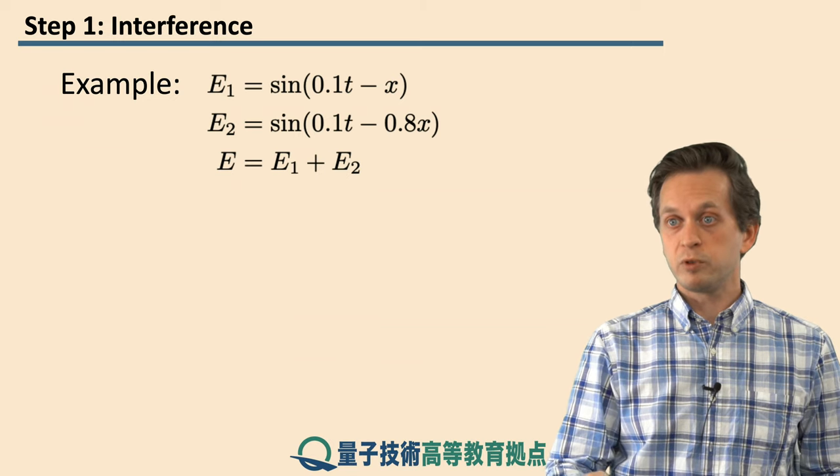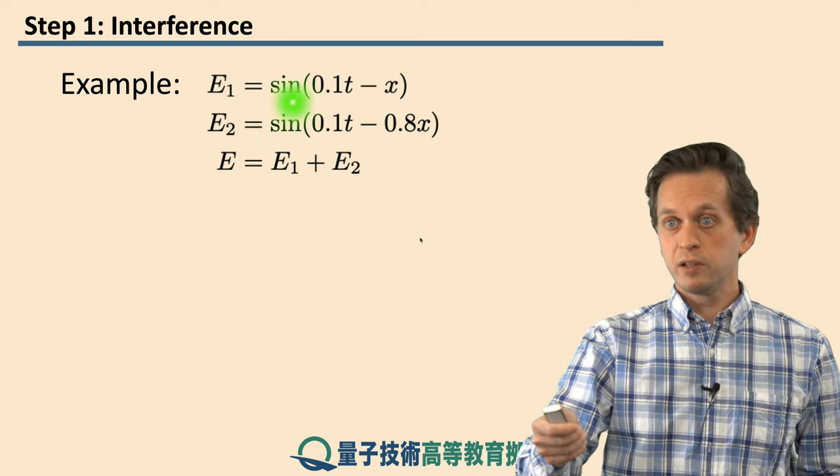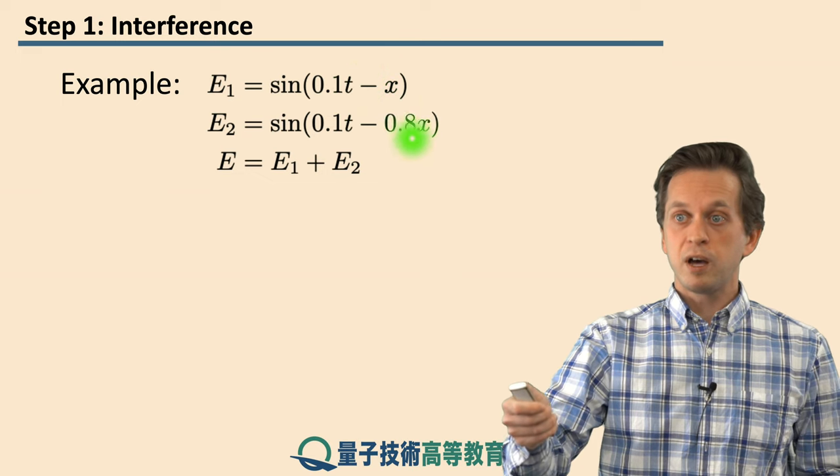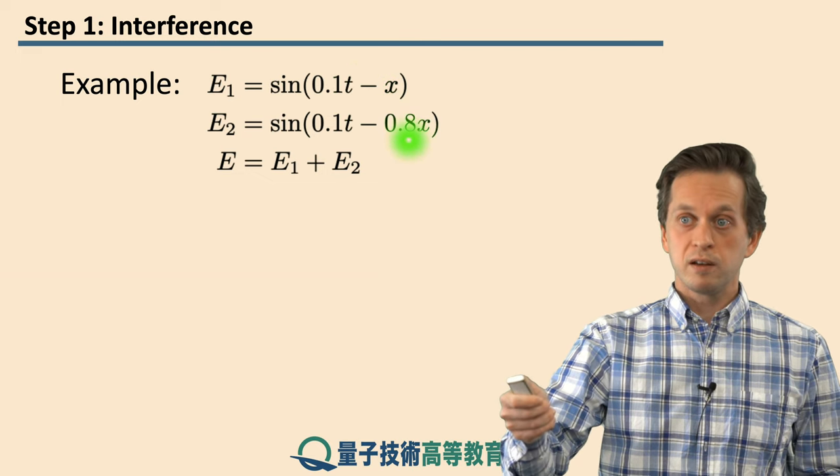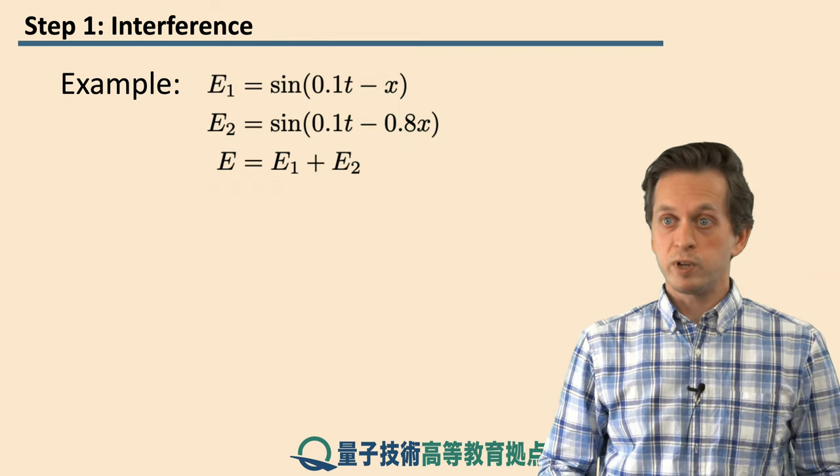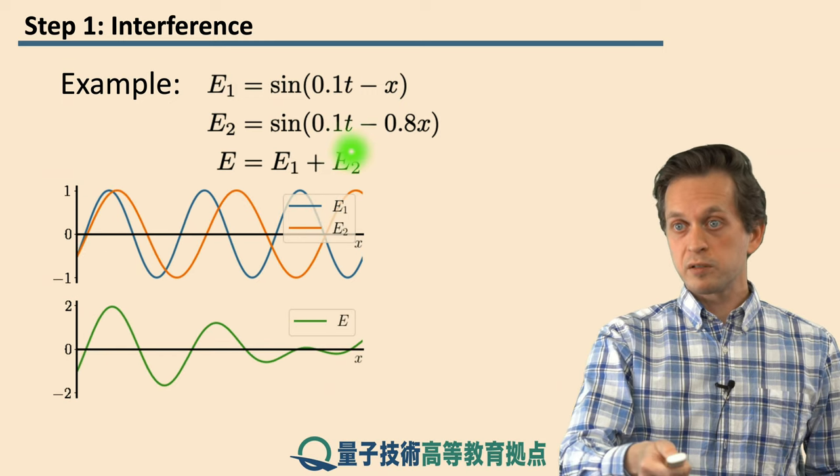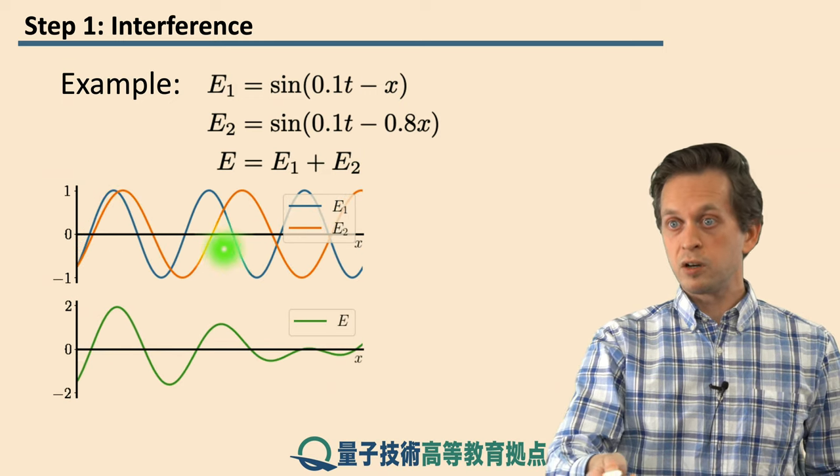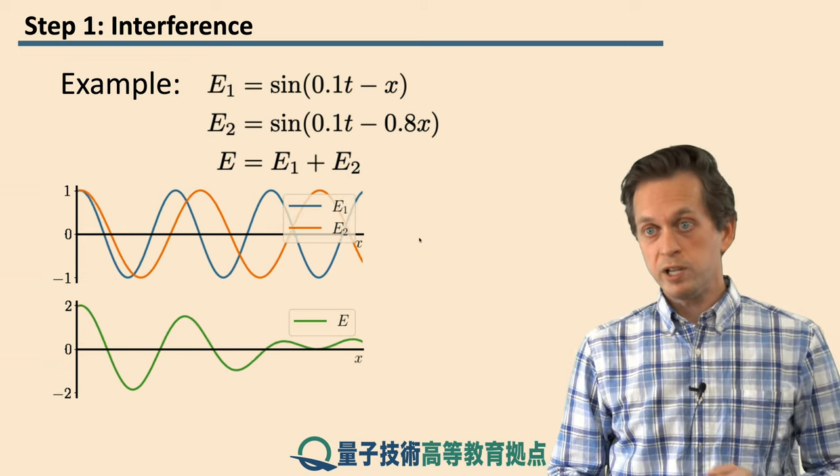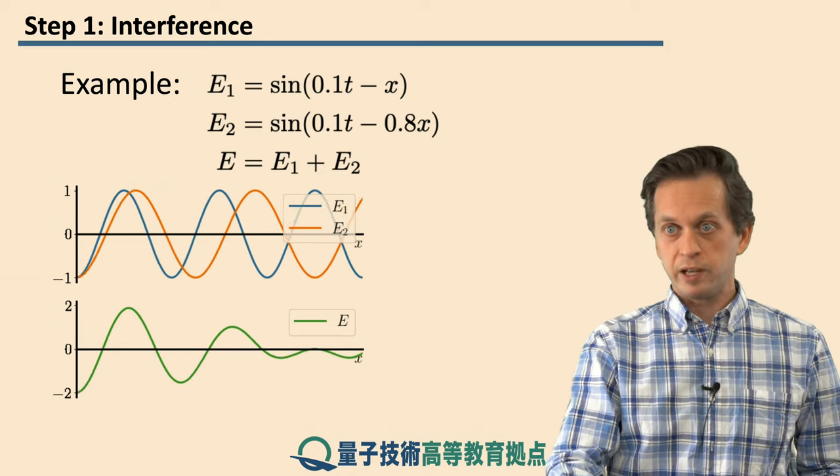So let's look at some examples. We've got two waves. We set their amplitudes to be equal for convenience. Both are 1. Their omegas are the same, 0.1. And the only thing that is different between them are the wave numbers k. For the first wave, k equals 1. For the second wave, k equals 0.8. So we add the two together. And what we get is the following. Here, with these blue and orange waves, we see the waves traveling independently. Whereas the green wave is the superposition of these two waves. And you can see the interference at play.